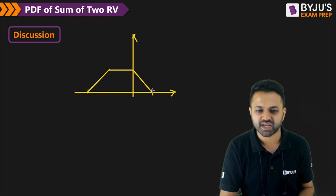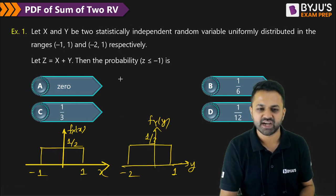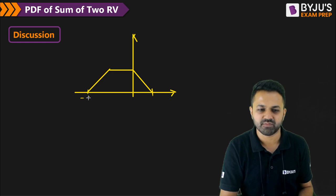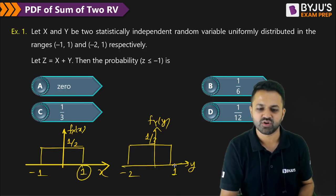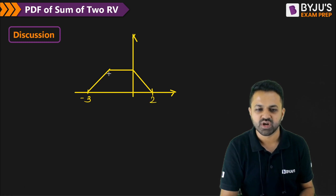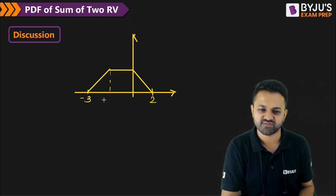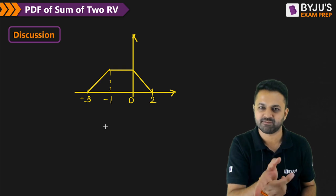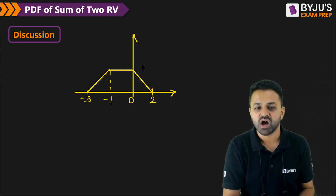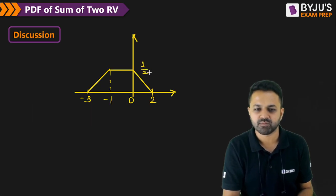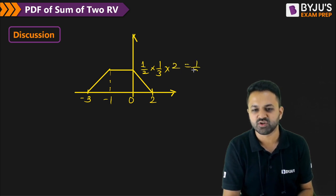The minimum value is the addition of the minimum values: minus 1 and minus 2, giving minus 3. The maximum value is the addition of the maximum values: 1 plus 1, giving 2. For the intermediate values, take the minimum of one and maximum of the other and vice versa, giving minus 1 and 0. The height is the multiplication of the two heights, 1/2 and 1/3, times the minimum width. The minimum width this time is 2, so the height is 1/3. This is the PDF of Z.